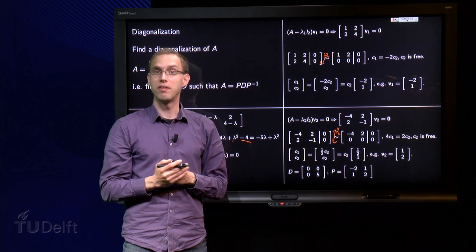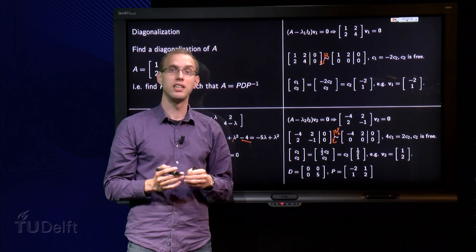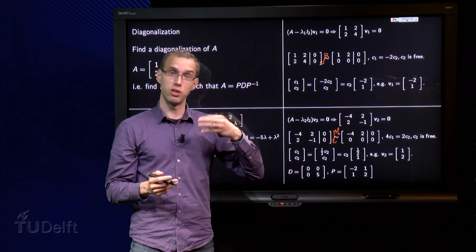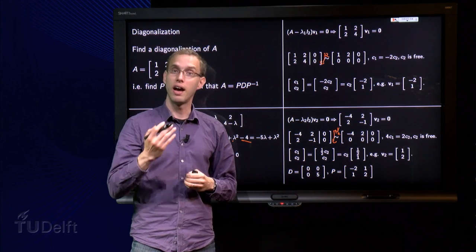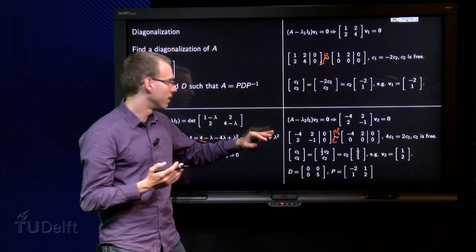So, this is how you can find a diagonalization of a matrix A. You see, it is quite a lot of work, because you have to find all eigenvalues, you have to find all eigenvectors, but once you have them, then you are done.